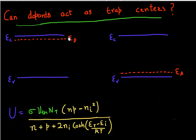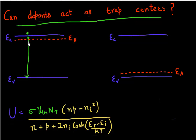If I have these dopants over here — in this case, these donors — they are creating states very close to the conduction band. Can these states created by the dopant act as a source for my recombination or generation process? Can this position of energy levels created by the dopant help in my recombination process as shown over here?